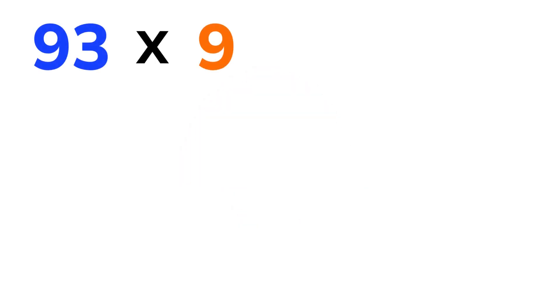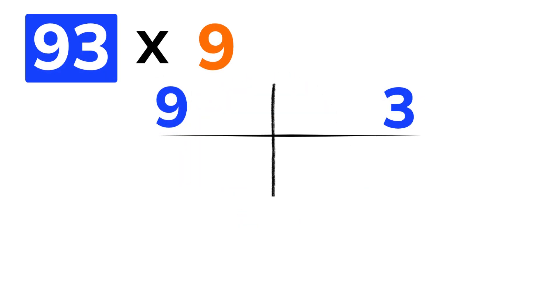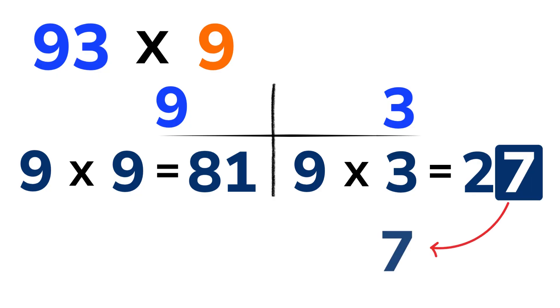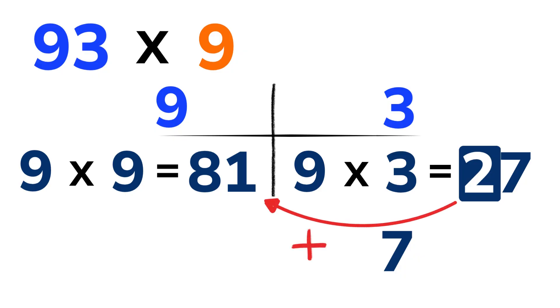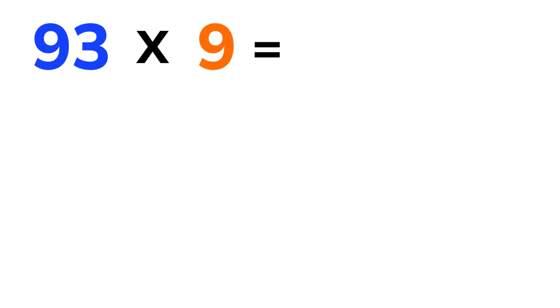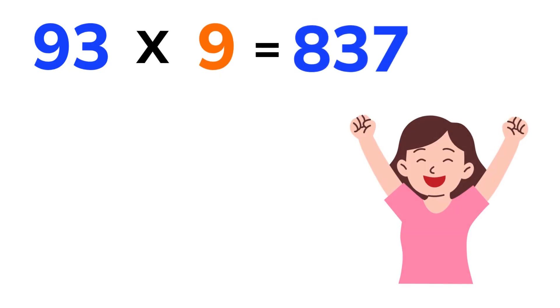93 times 9. You see 9 and 3, right? 9 times 9 is 81. 9 times 3 is 27. Take the 7 from 27. That goes in the units place. Then take the 2 and add it to 81, which equals 83. So the final answer is 837. And you just did that in your head. Isn't that amazing?